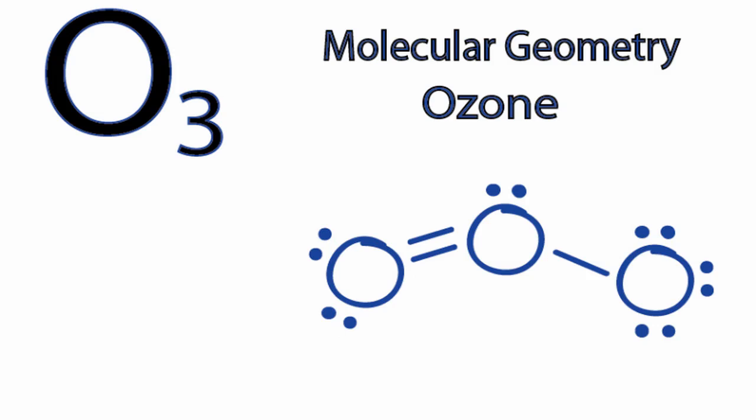When they do that, that forces those two oxygens to move down some, and that gives us this bent shape. So we can see that it's going to be a bent shape.